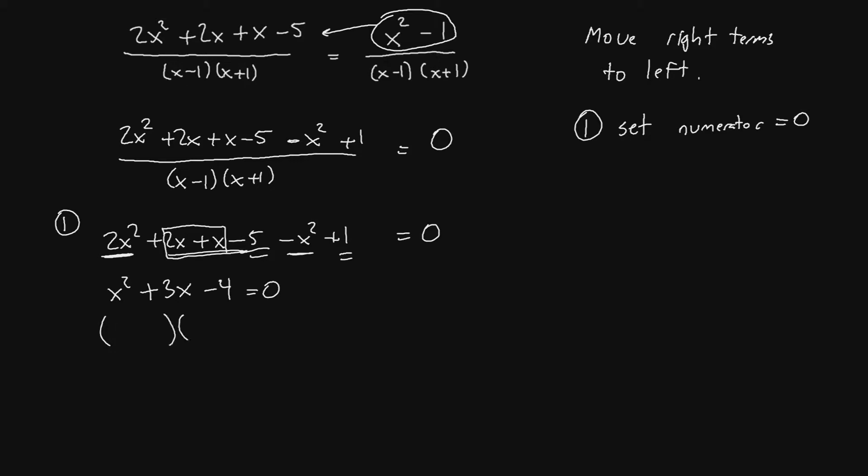This will be factorable and we'll need to think of two numbers that multiply to negative 4. The first one that comes to mind for me is negative 4 plus 1. But, if we take negative 4 plus 1 and add them together we get negative 3, that is the wrong sign. So, that means we'll have to do positive 4 and negative 1. That will give us positive 3 and that's a match for the 3x they gave us. So, we'll make that change now. Set this equal to 0. Now, we'll say x plus 4 equals 0 and x minus 1 equals 0.